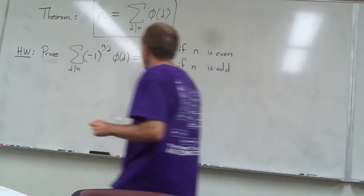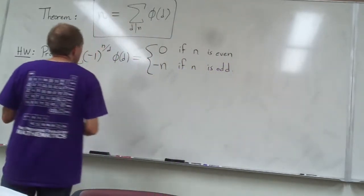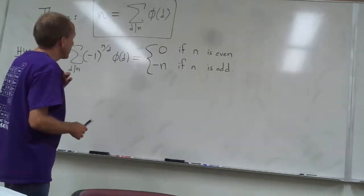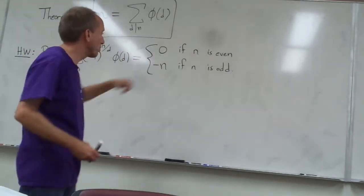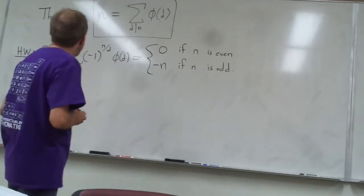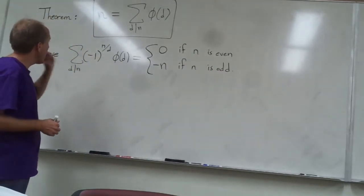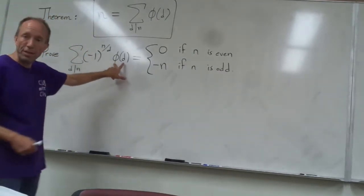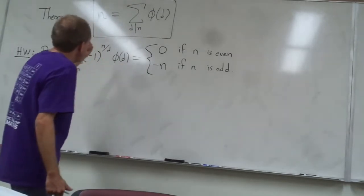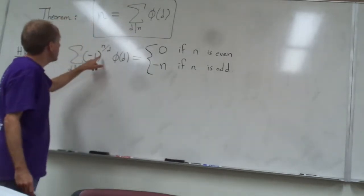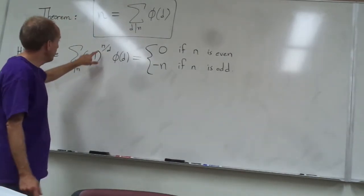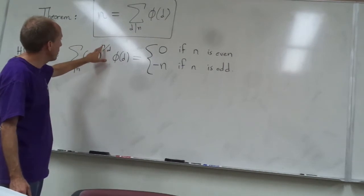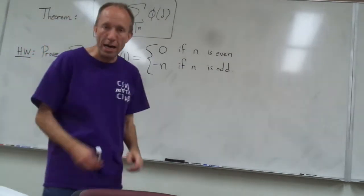This is the problem that some of you may want a little help with. It's kind of a two-part proof. We're adding up all the phi of d's again, but we're putting minus signs in front of some of them depending on whether n over d is even or odd.